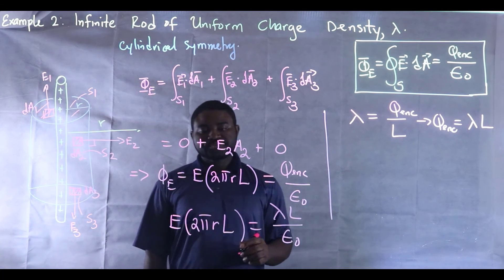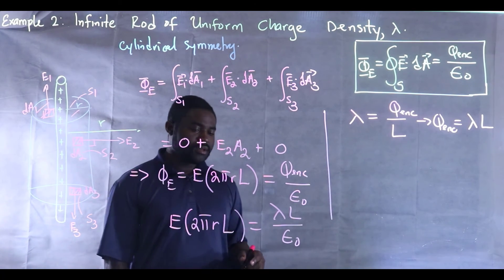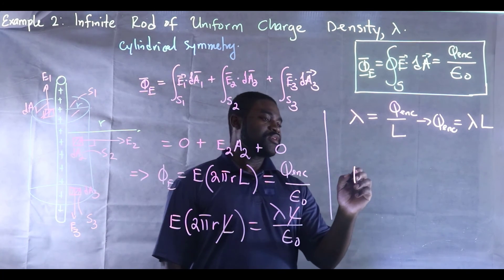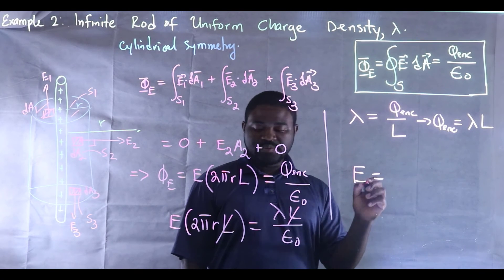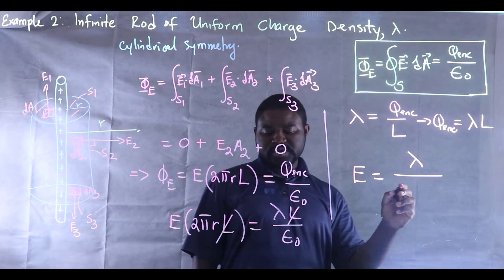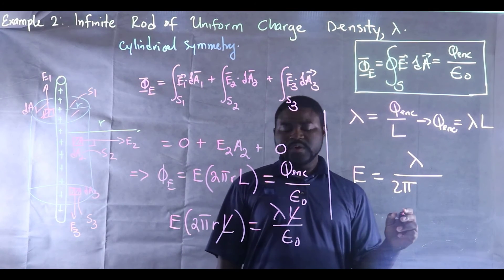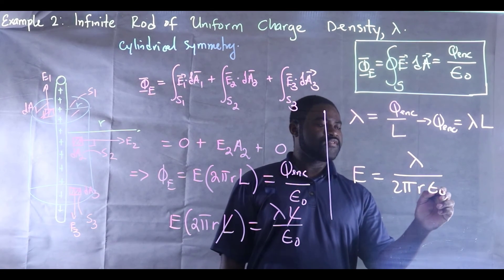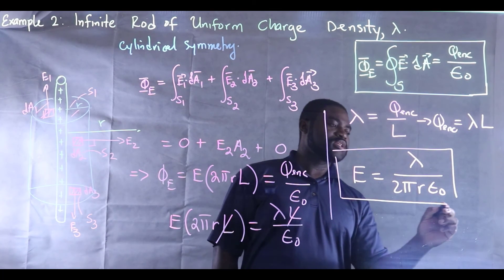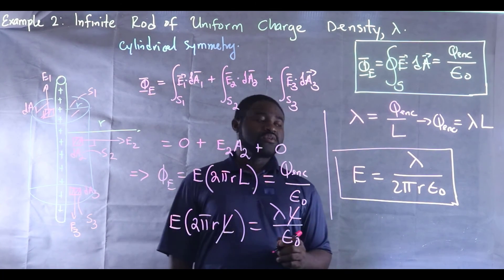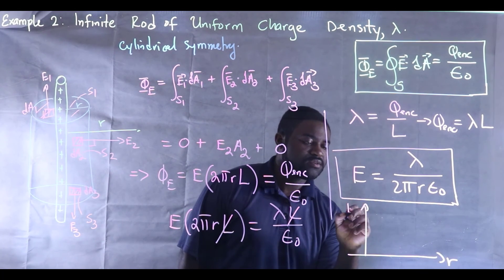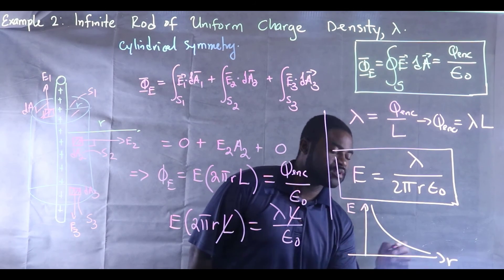Therefore we can simplify this, and the electric field E will be equal to lambda divided by 2πr epsilon-not. So this is the electric field at distance r. So if we now draw the graph of E against r, the graph will look like that.